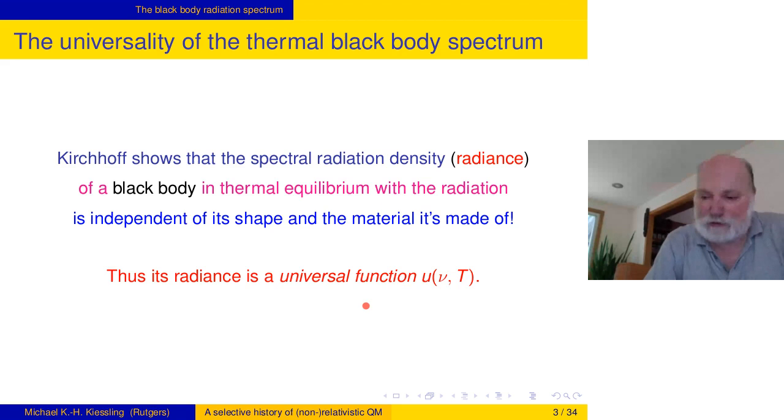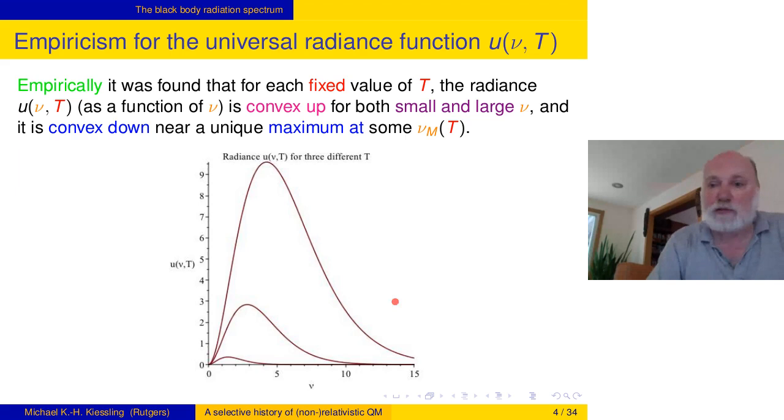He showed that the spectral radiation density, called radiance of a blackbody in thermal equilibrium with its radiation, is independent of the shape of the body and independent of the material that it's made of. So that spectral function, the energy radiated per unit of time, per unit solid angle, per unit area through which it's being emitted, is a function only of frequency and temperature. U for universal function.